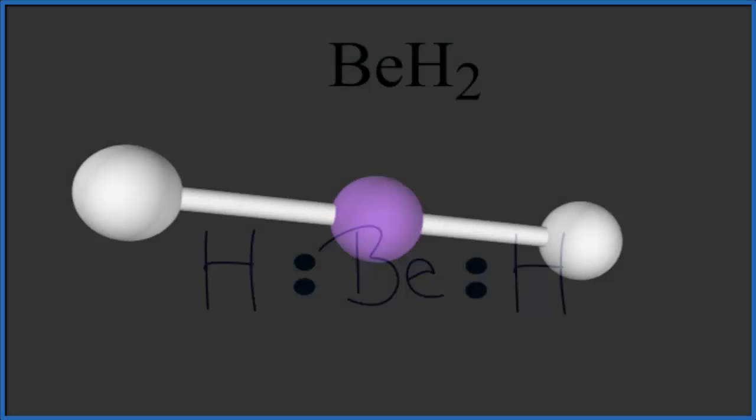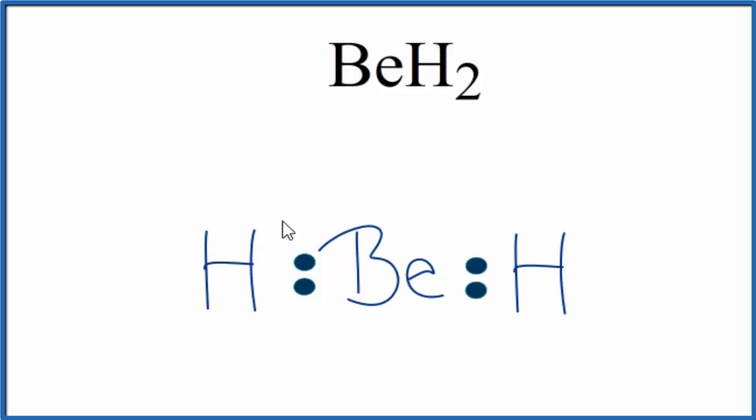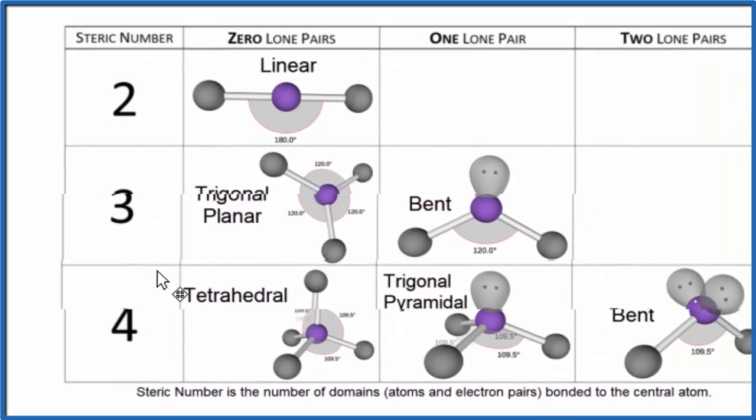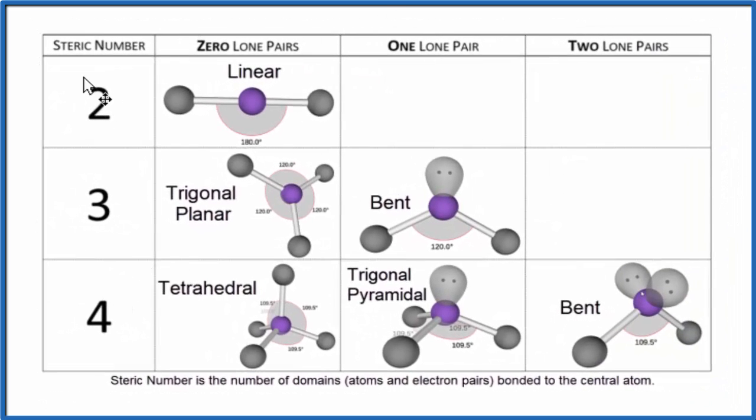Let's go back to our Lewis structure. So we have two atoms attached to the beryllium and no lone pairs. That gives us a steric number of two. We look in our chart, steric number is two here. And no lone pairs, linear molecular geometry.